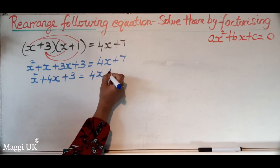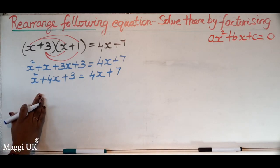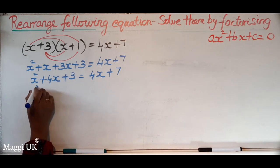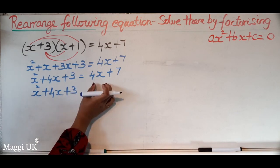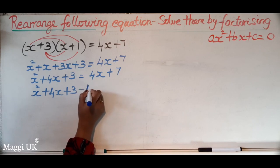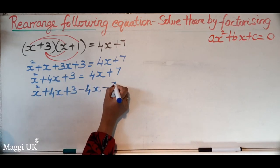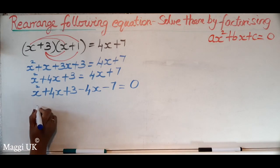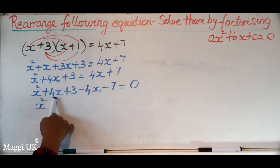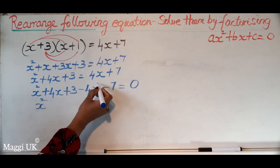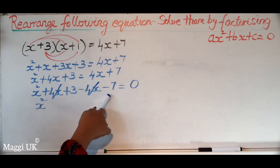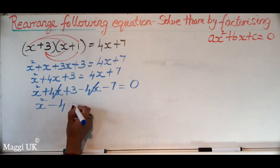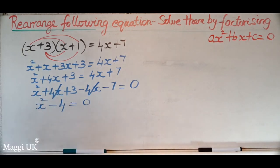Now we need to bring this to the left hand side. So we have x squared plus 4x plus 3, and when this comes to the other side, positive 4x becomes minus 4x and positive 7 becomes minus 7, equals 0. Simplifying further: x squared, the 4x and minus 4x cancel, and positive 3 minus 7 gives minus 4, equals 0.